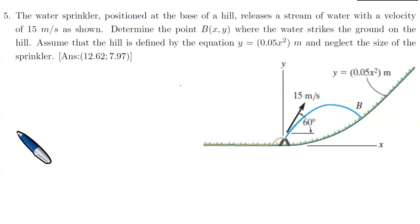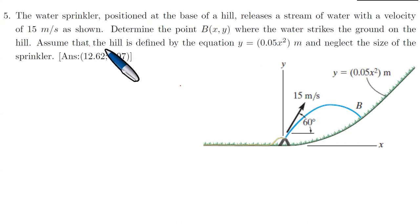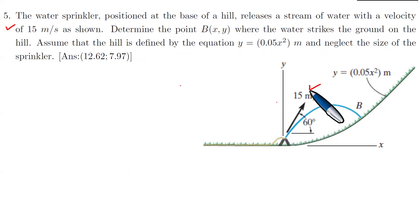We have exactly this kind of situation here. There are certain equations of motion that we're going to focus on. We are told that the water sprinkler positioned at the base of a hill releases a stream of water with a velocity of 15 meters per second. So if the velocity is exactly 15 meters per second, it means that we have a couple of things to consider.